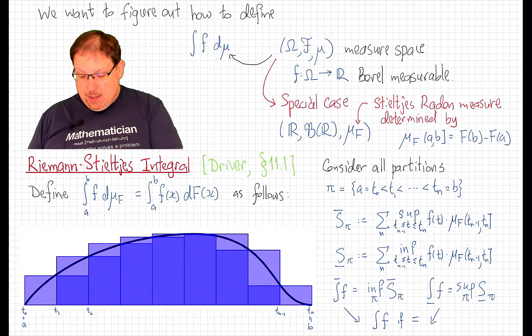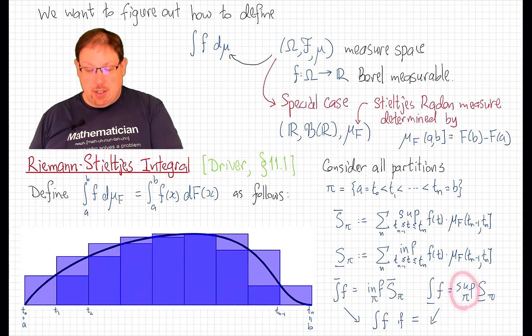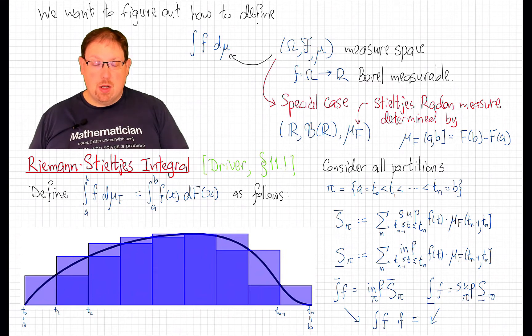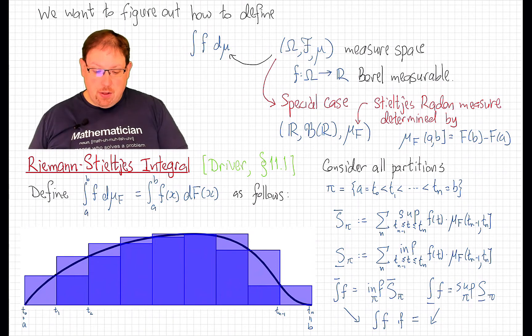Or the supremum over all partitions of the lower sums. In each case, this corresponds to making the partition mesh, the maximum width of any partition interval smaller and smaller.